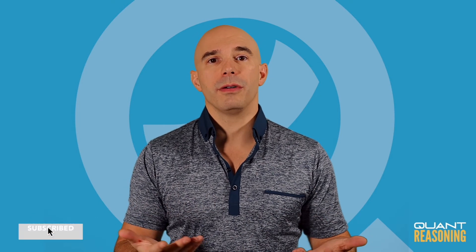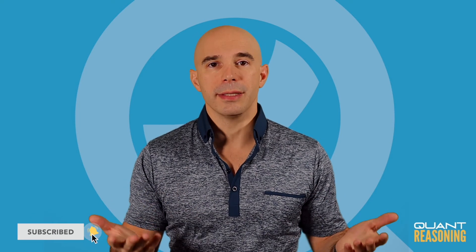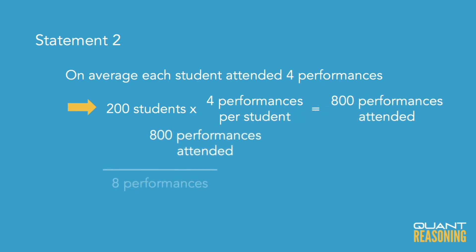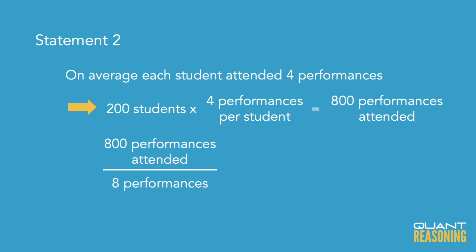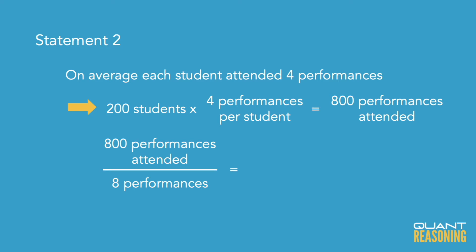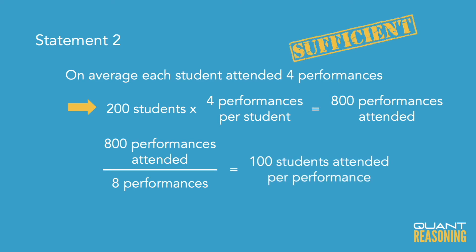I multiplied the number of performances per student by the number of students, giving me the total number of performance attendances. If the total number of attendances was 800 and there were eight performances, we can figure out the average number of students per performance: 800 divided by 8 equals 100 students per performance on average. Therefore, the correct answer is B.